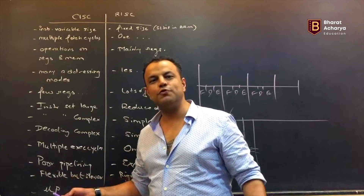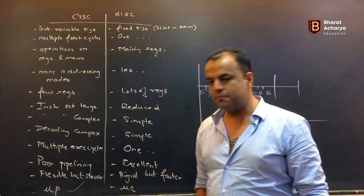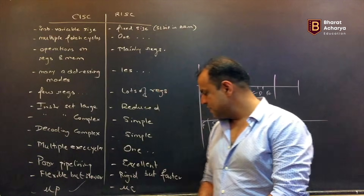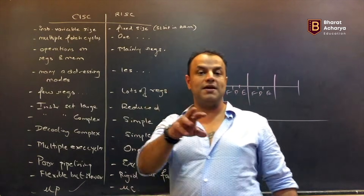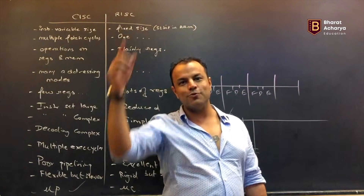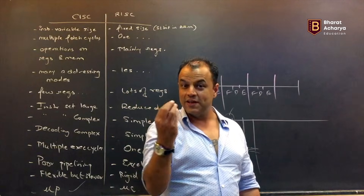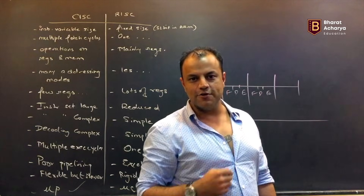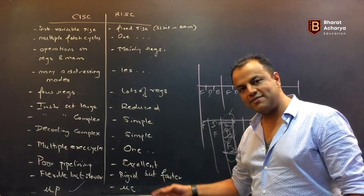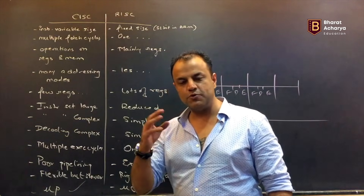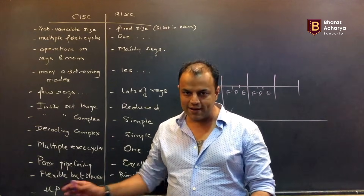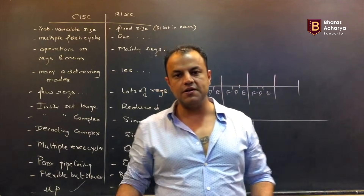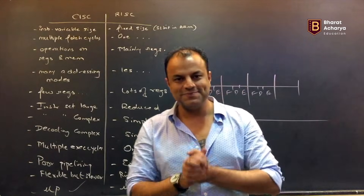CISC gives you very poor pipelining because of pipeline bubbles; RISC gives you excellent, picture-perfect pipelining — everything will require exactly one cycle, no pipeline bubbles. The philosophy of a CISC processor is to be flexible but slower — flexibility brings slowness. The philosophy of RISC is to be rigid so that you are fast. CISC flexibility is useful in general-purpose applications, which is what a computer does — computers have microprocessors based on the CISC model. Microcontrollers are used in appliances like a mouse, which doesn't have to run every program in the world — so you don't want flexibility, you want performance. Microcontrollers are RISC-based; microprocessors are CISC-based. I hope you got the idea of a RISC processor.